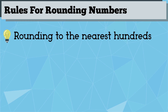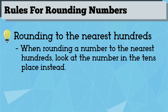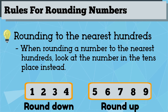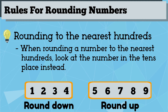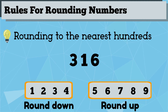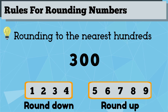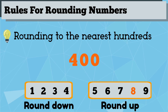If you want to round a number to the nearest hundreds, we look at the tens place, but everything else works the same. If we have 316, since the tens digit is 1, we round the number down to 300. If we have 382, since the tens digit is 8, we round the number up to 400.